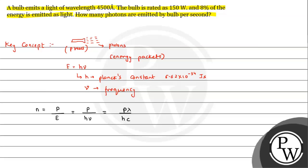The bulb given here has a power rating of 150 watt. Since only 8% of the energy is emitted as light, the effective power is 8% of 150 — that is 8 divided by 100 times 150. Calculating 8% of 150 gives us 12 watt.